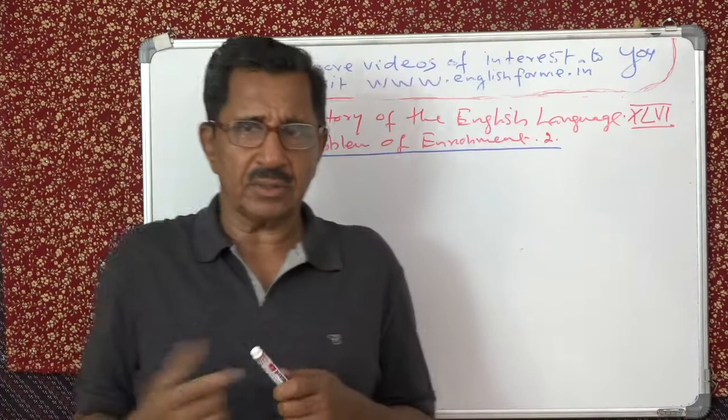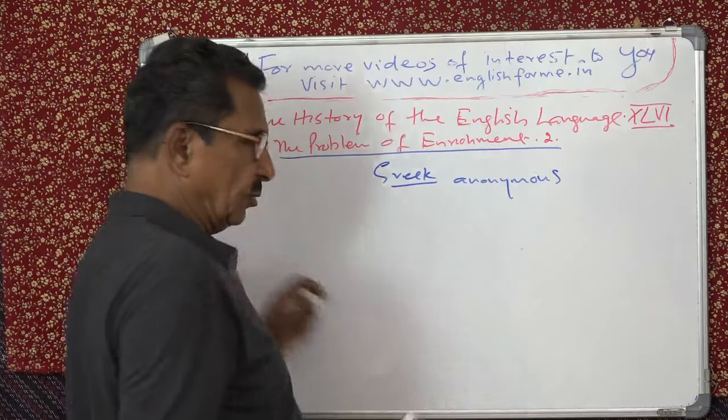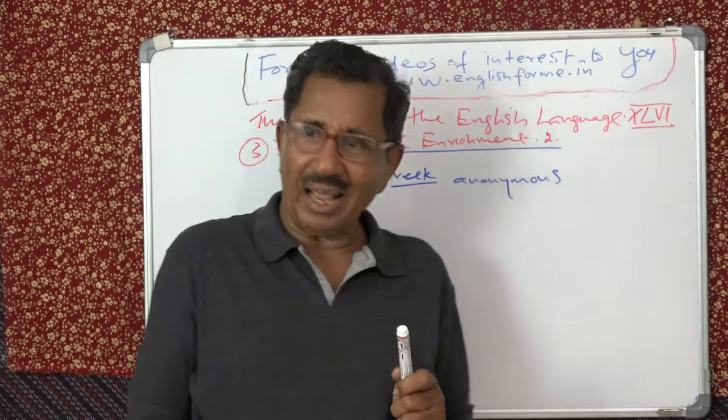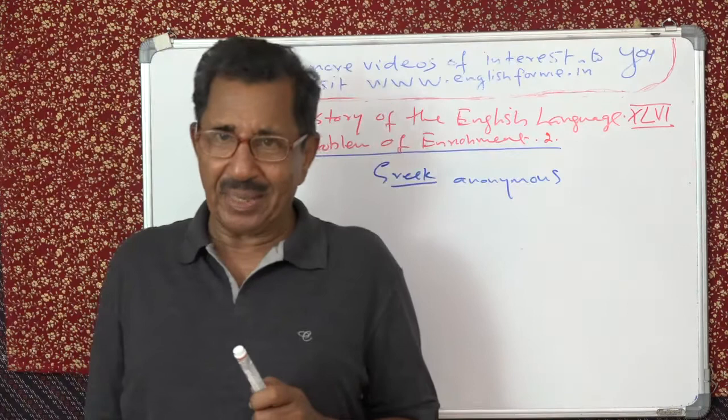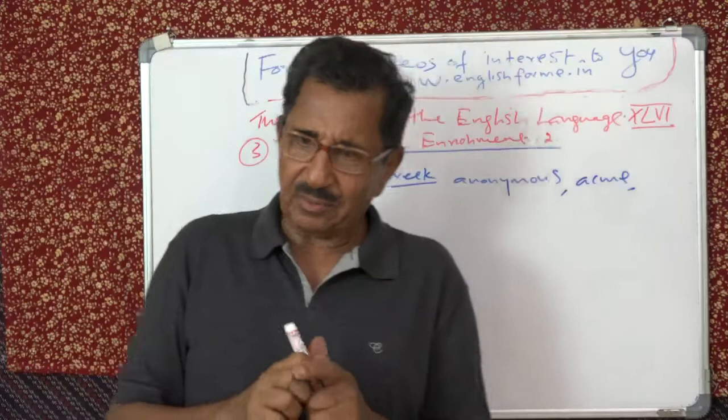Anonymous — some people write anonymous letters to the authorities, meaning without signing and without giving their name. Then acme — the highest point of anything is acme. That's a good word. Then catastrophe — very often used. Catastrophe means a sudden, terrible happening. You remember last year the floods in Kerala — so it's a catastrophe. Then ephemeral — it's a good word, very often used. Ephemeral means temporary. Then thermometer, tonic — these are from Greek language.